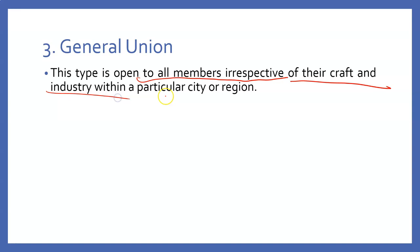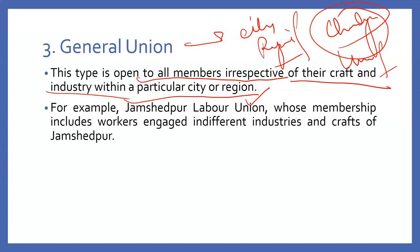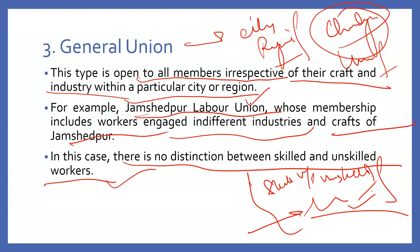Let's talk about the third one, called general union. This type is open to all members irrespective of their craft or industry, within a particular city or region. For example, if there is a company in Chandigarh, they have made a union focused on that particular city. There can be members of different industries and different crafts — for example, the Jamshedpur labor union includes anyone working in Jamshedpur irrespective of their industry and craft. In this case, there is no distinction between skilled and unskilled workers; only your city or area of work matters.